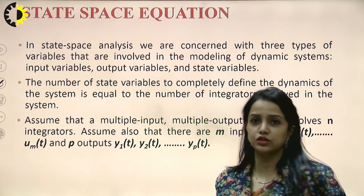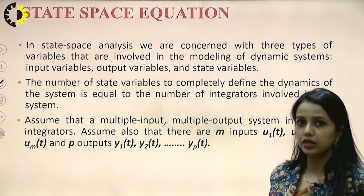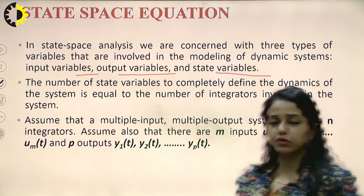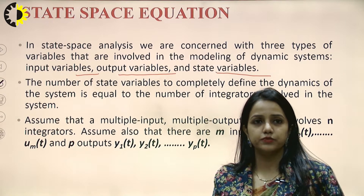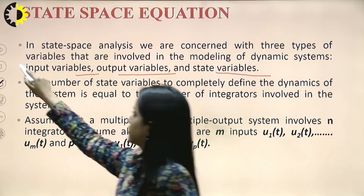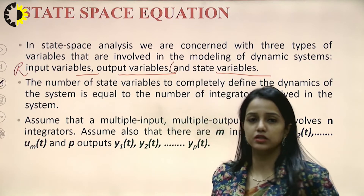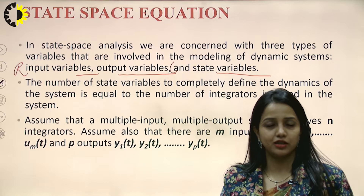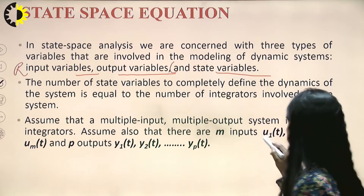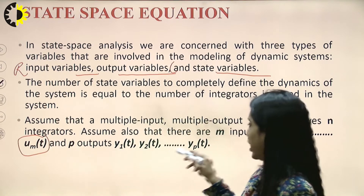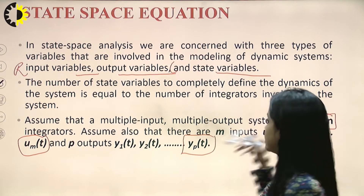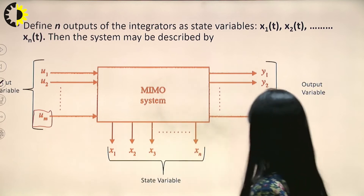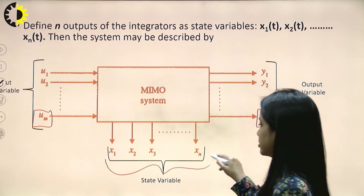In state-space analysis we are concerned with three types of variables involved in modeling of dynamic systems: input variables, output variables, and state variables. We are very familiar with input and output variables from transfer function analysis — input variable R and output variable C. State variables are intermediate variables which tell us the intermediate states of a system, which we do not see and cannot estimate from transfer function analysis. Let us assume we have M inputs, P outputs, and N intermediate levels — the number of integrators — giving us N state variables.